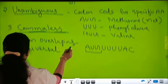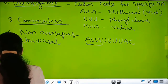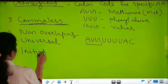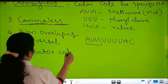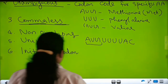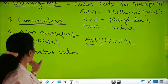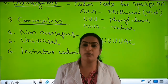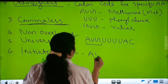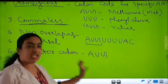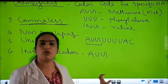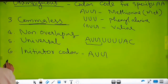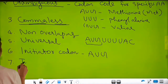The sixth feature is the initiator codon. There is an initiator codon which is the starting codon, and that is AUG. AUG is the initiator codon or starting codon for the translation process.